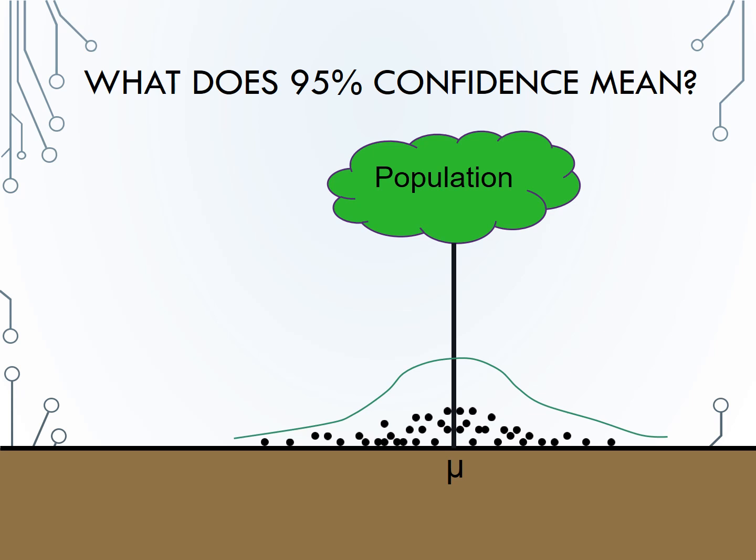This means that in a normal distribution, 95% of the data is within two standard deviations of the mean, or for this example, 95% of sample means will be within two standard deviations of the population mean.